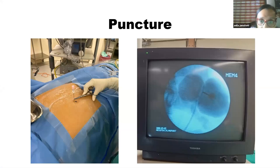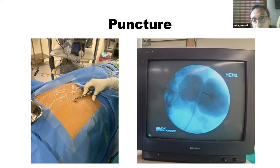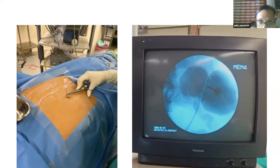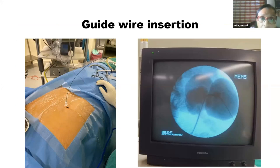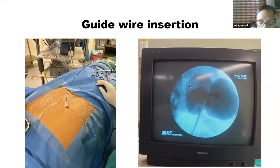You push the needle in after rotating the C-arm to about 10–15 degrees, and you can confirm you are in the system by pulling out of the stellate. Then you can place a guide wire directly from the upper pole into the ureter — you can see this guide wire going into the ureter on the fluoroscopic image.